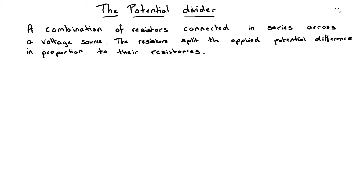In this video we're going to look at the potential divider. A potential divider is simply a combination of resistors connected in series across a voltage source. The resistors connected in series will split the applied potential difference in proportion to their resistances, so the larger resistance will take a larger share of the applied potential difference.